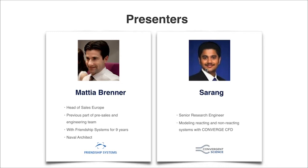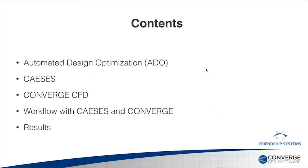In this webinar, we will be talking about recent work we did with Friendship Systems on establishing a process to perform automated piston bowl optimization. Today, I'll first talk about automated design optimization — the process and the challenges associated with it. Then Mattia will talk about CASES, and I will talk about Converge CFD. After that, we will look at the workflow we have established and then look at some results.